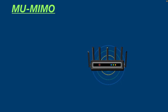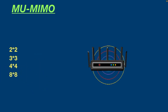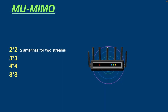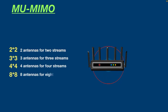Now let's get into the technical details. Multi-User MIMO routers come in different variations such as 2x2, 3x3, 4x4, or 8x8. These digits indicate the number of streams created by the router, which means 2x2 has two antennas for two simultaneous streams, and 3x3 means it has three antennas and is able to connect three devices simultaneously.